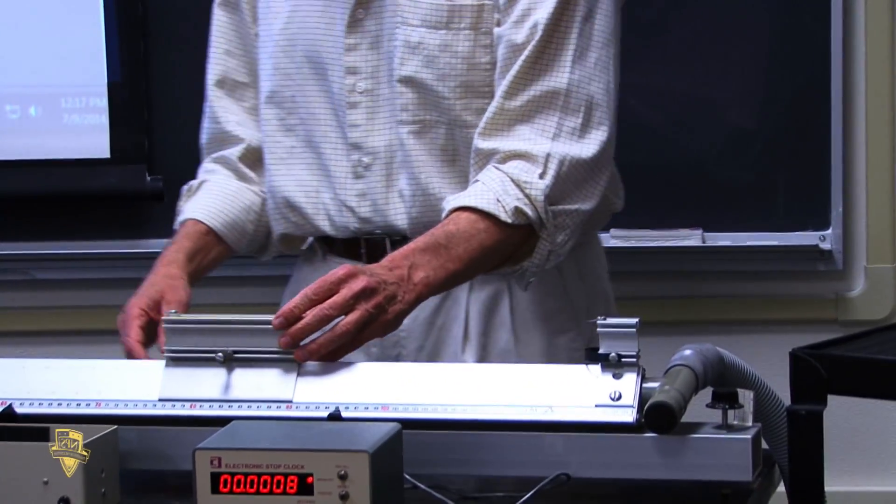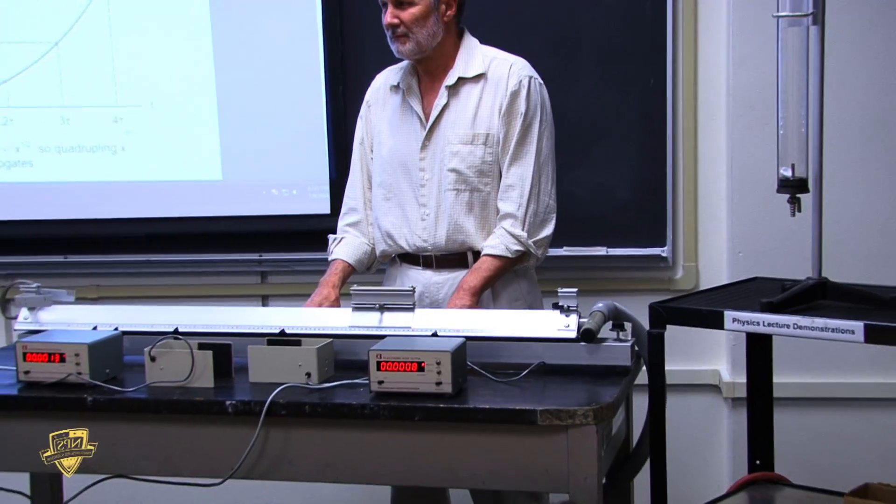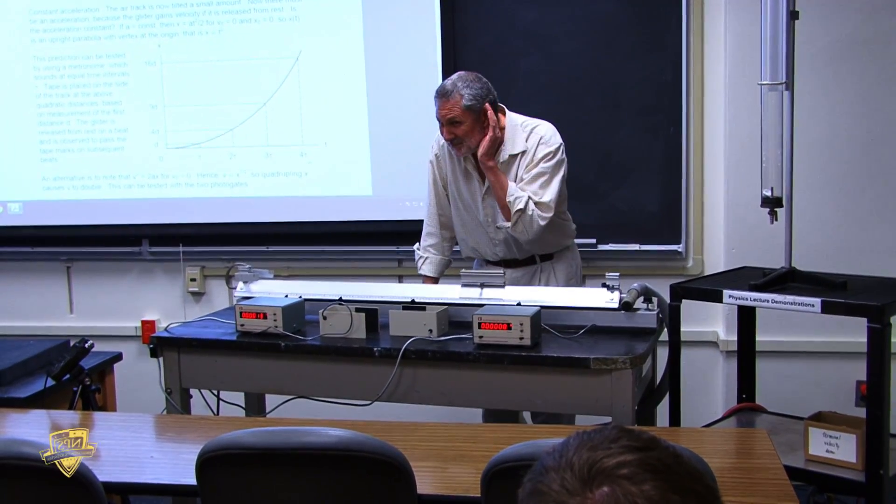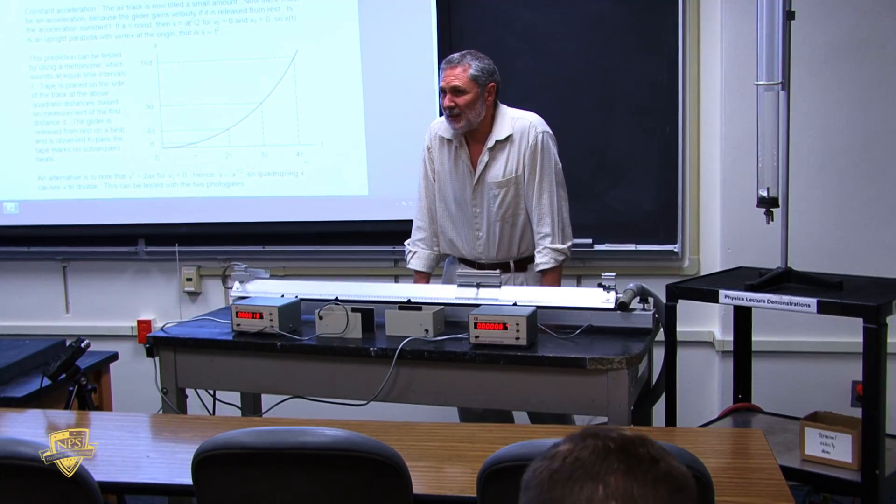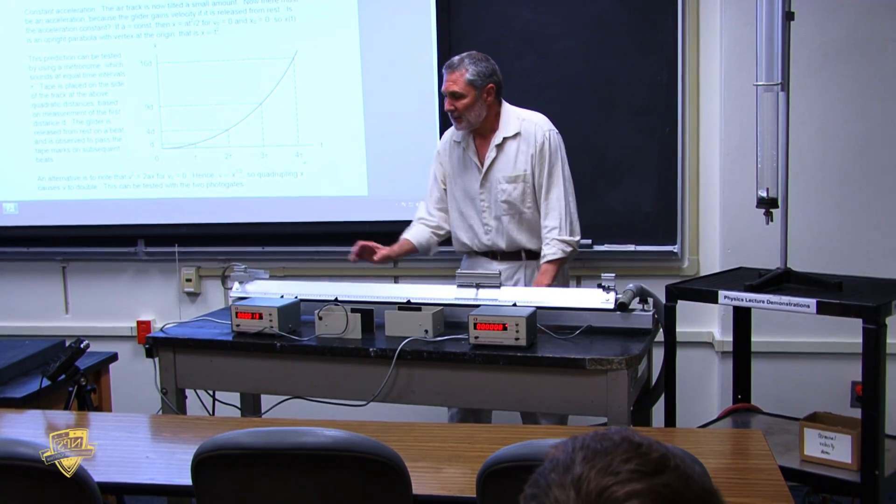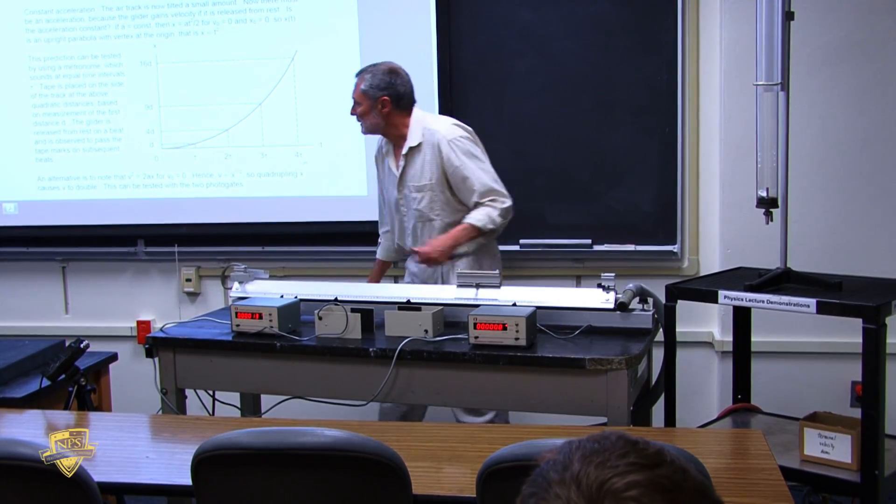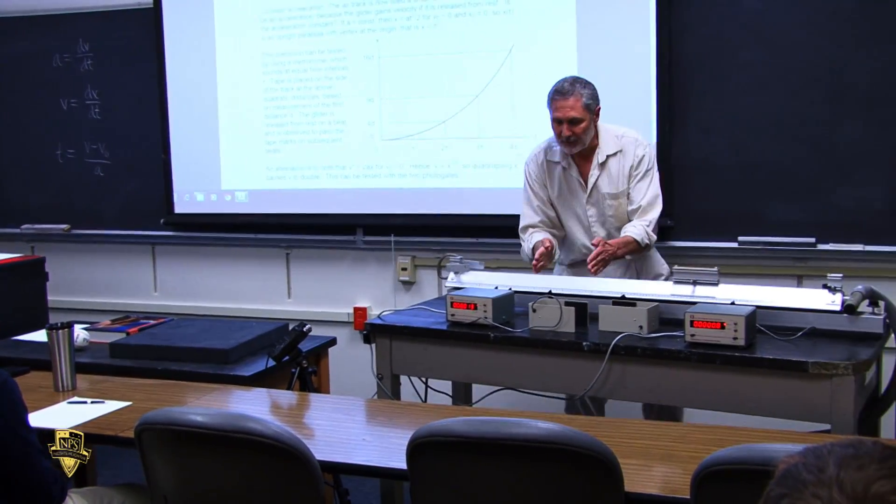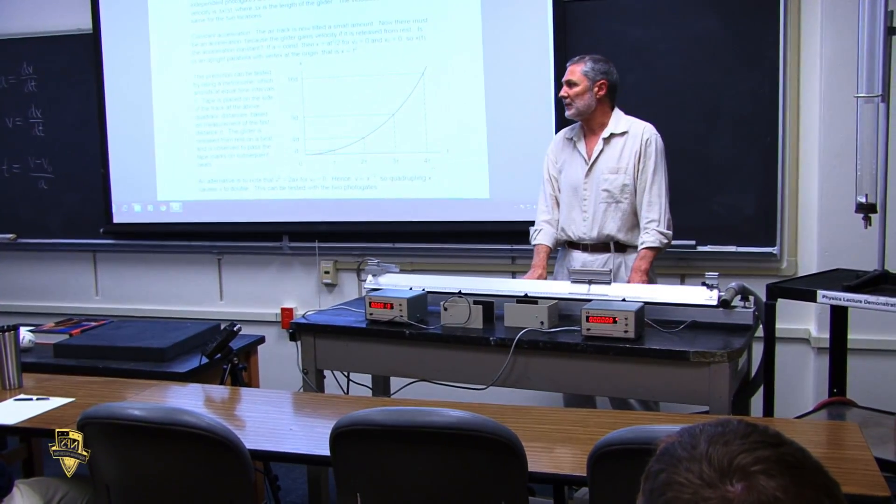How would you describe the motion you just saw there? Constant velocity. Yes, it looks constant. The rate of change of position with respect to time is a constant. So over any time interval, it always covers the same distance. That's constant velocity.